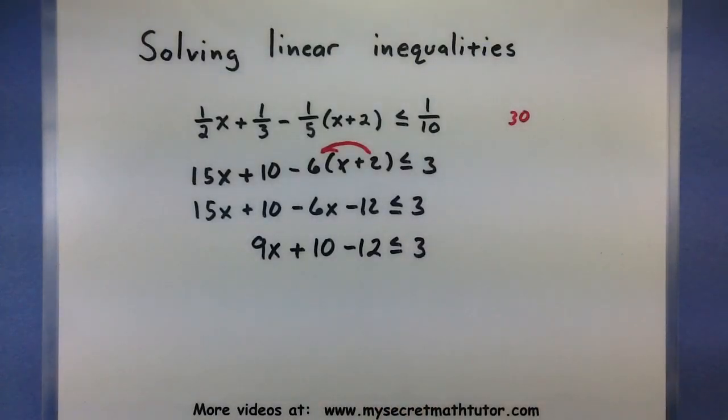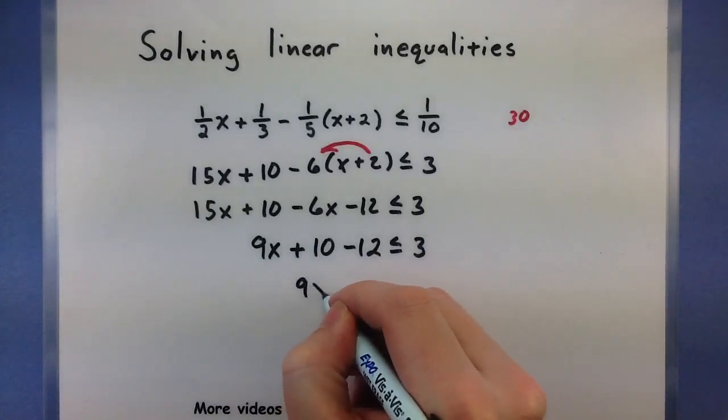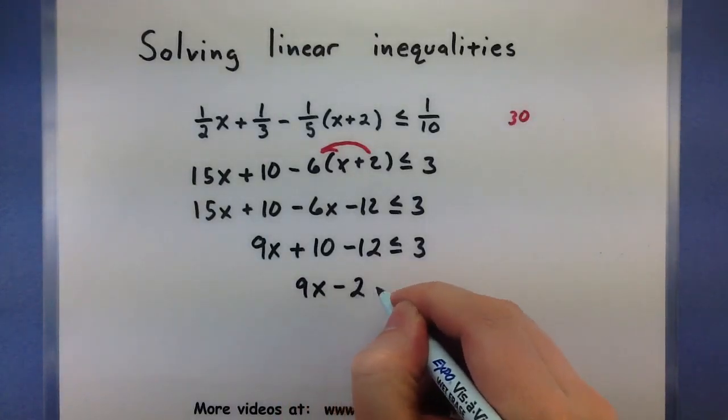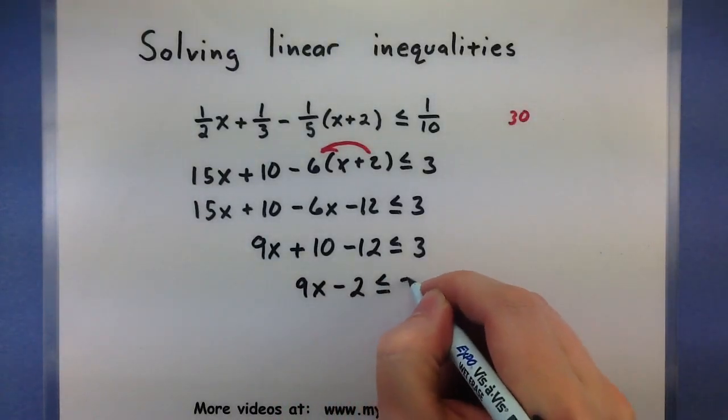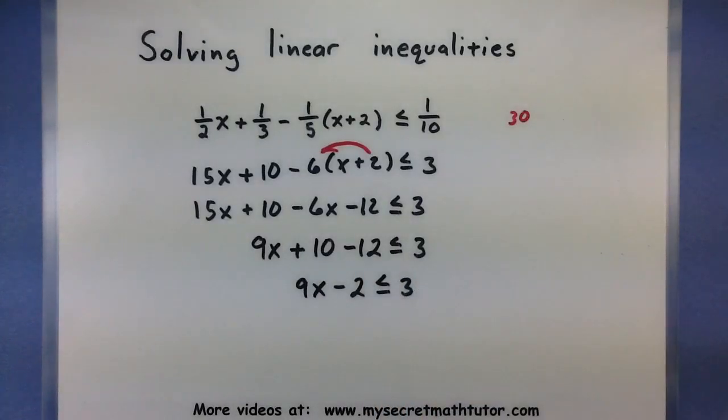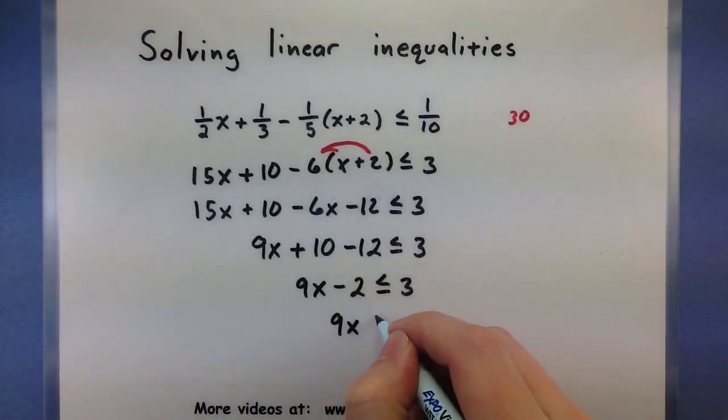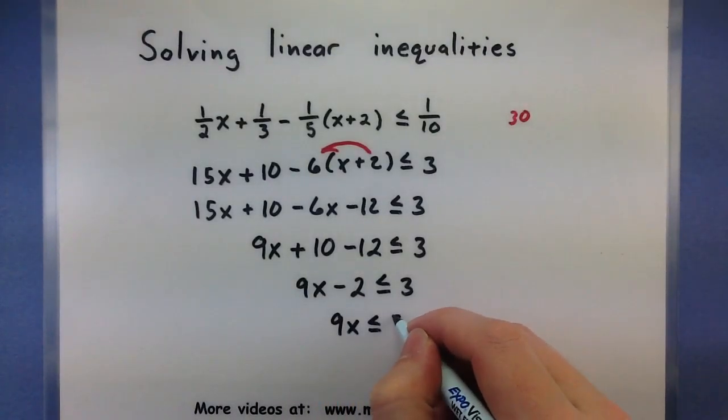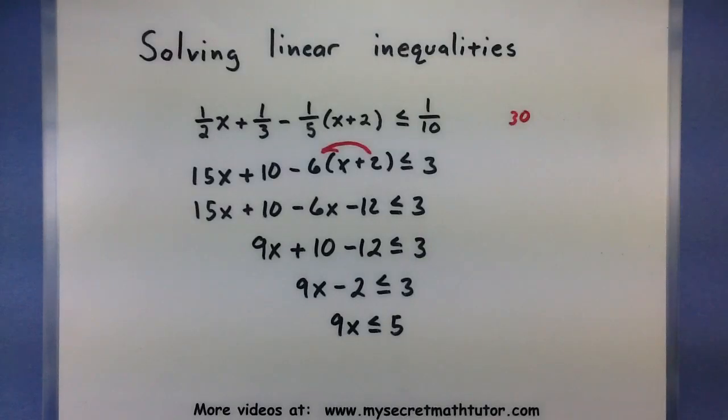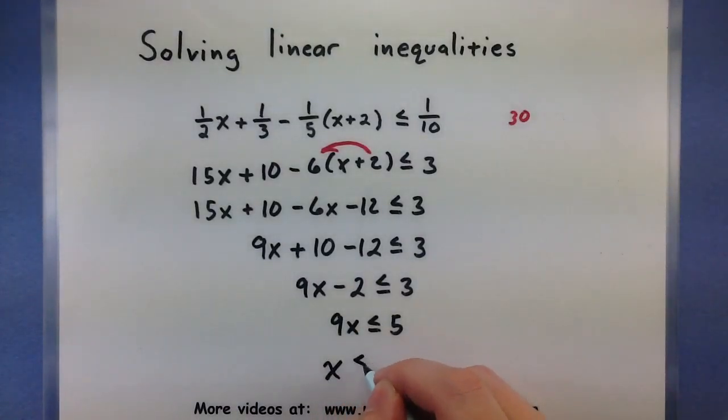Alright, looking pretty good. A few more things we can combine. Looks like the 10 and the minus 12. Awesome. Let's go ahead and add the 2 to the other side. And divide both sides here by 9. So x is less than or equal to 5 ninths.